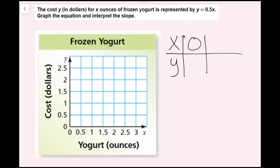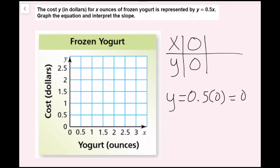So if I plug in 0, I'm going to get y equals 0.5 times 0, which is 0. That makes sense because this point, (0, 0), is the origin, and we know the origin is in all of our proportional relationships. So we know this is going to be a proportional relationship.